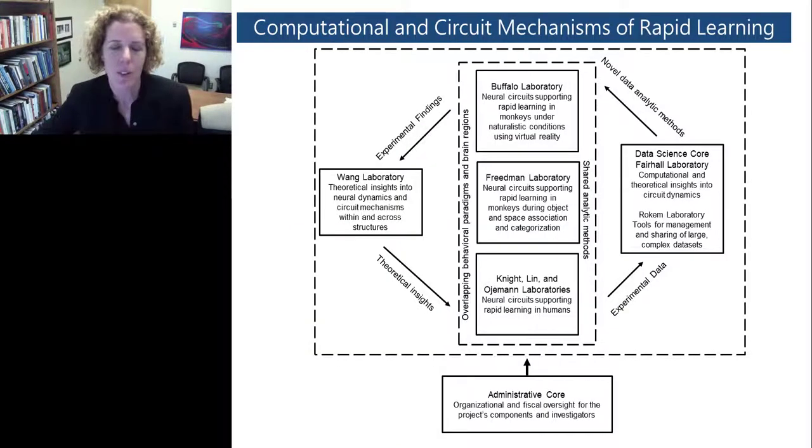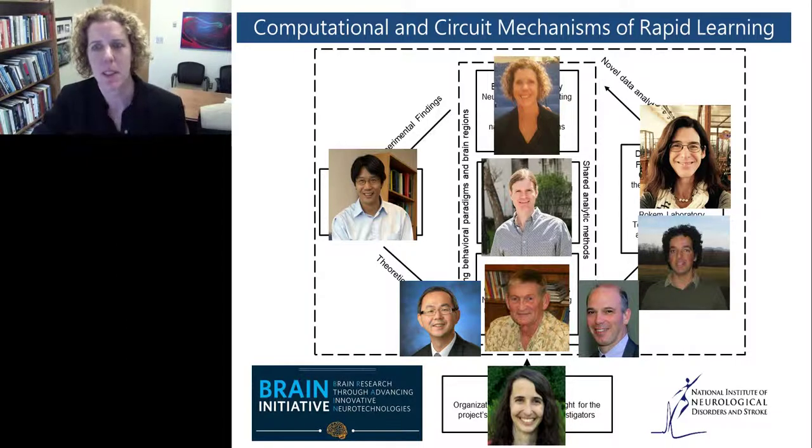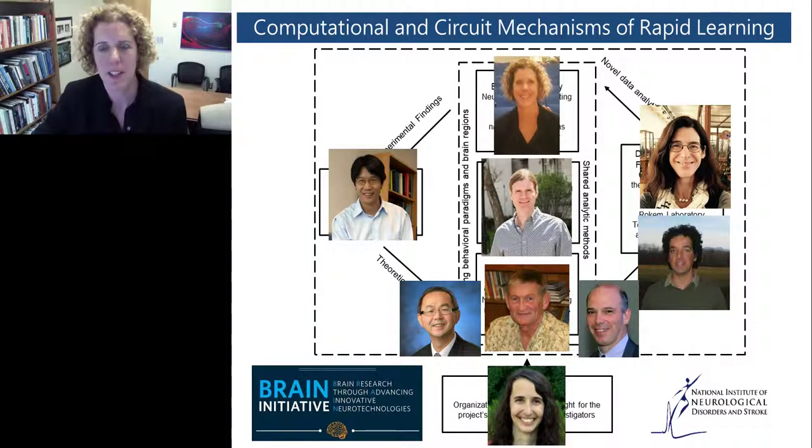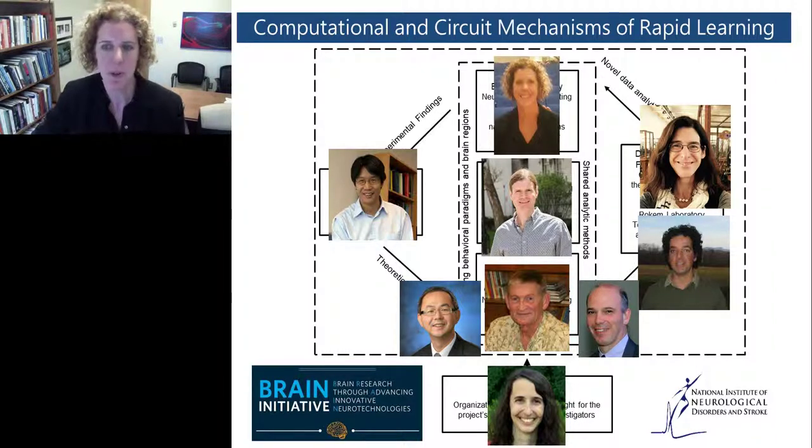The overall goal of our U19 program is to develop a comprehensive theory of the circuit mechanisms that underlie the human brain's ability to establish neural frameworks that enable rapid new learning. I want to acknowledge both our funding sources through the National Institutes of Neurological Disorders and Stroke, as well as the Brain Initiative.